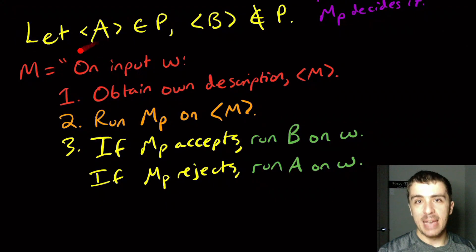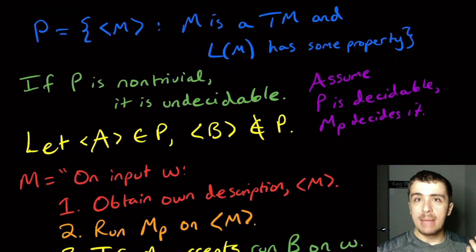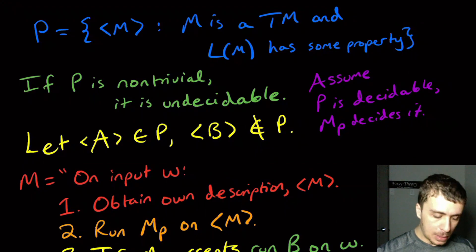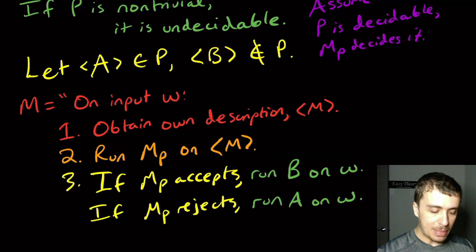M and A are effectively the same machine with respect to the strings, and because this property P only has things to do with the language of the machine.